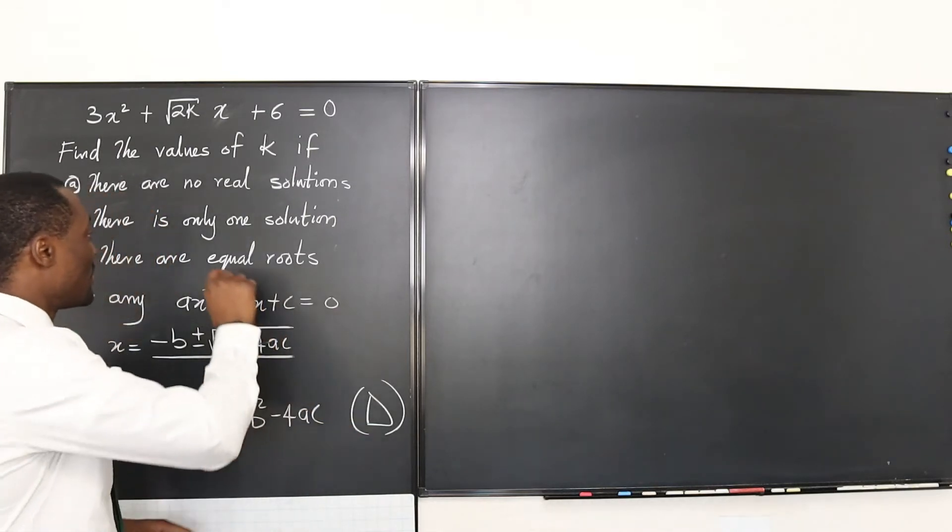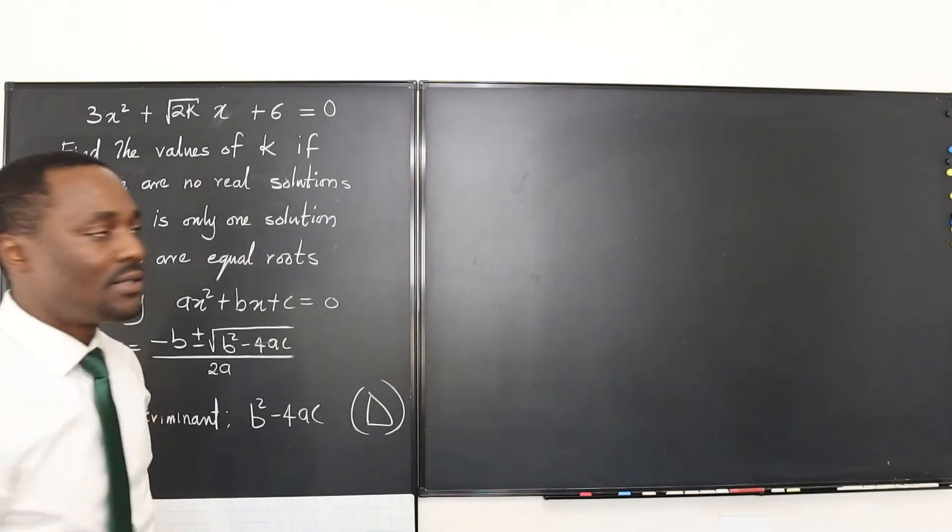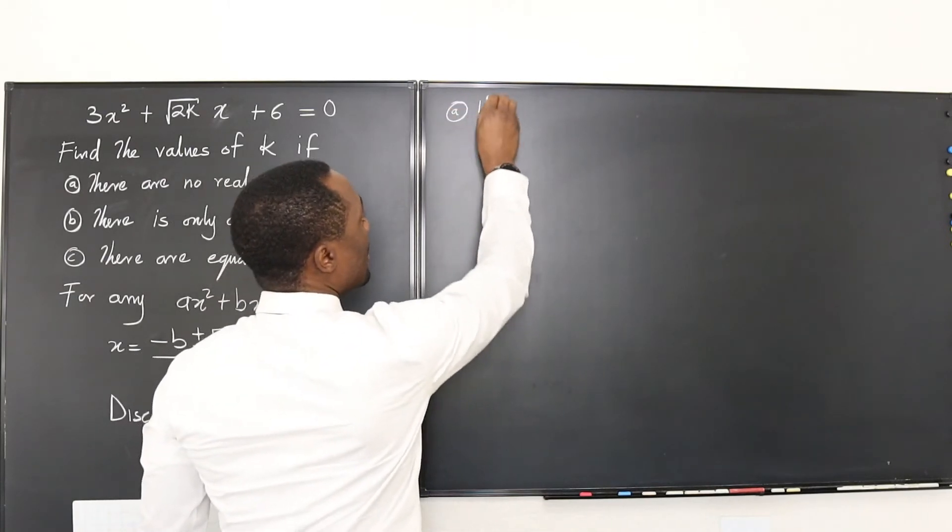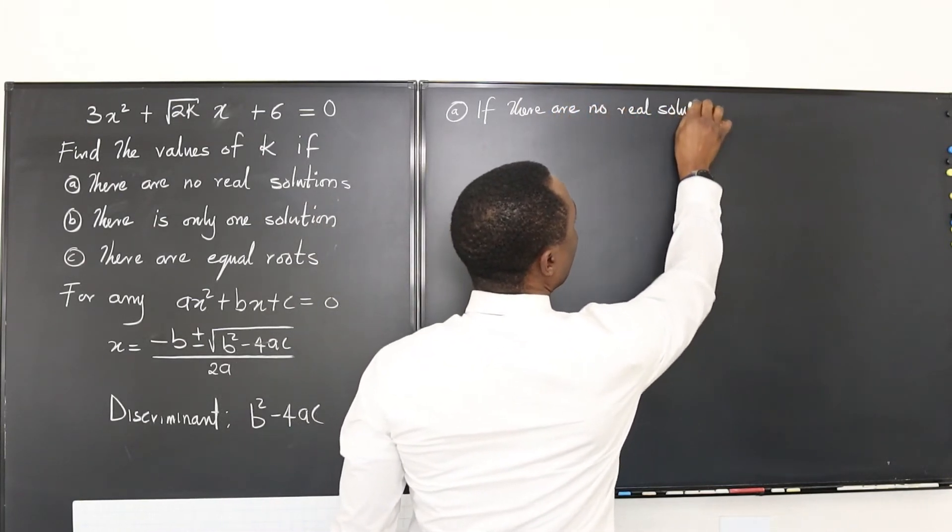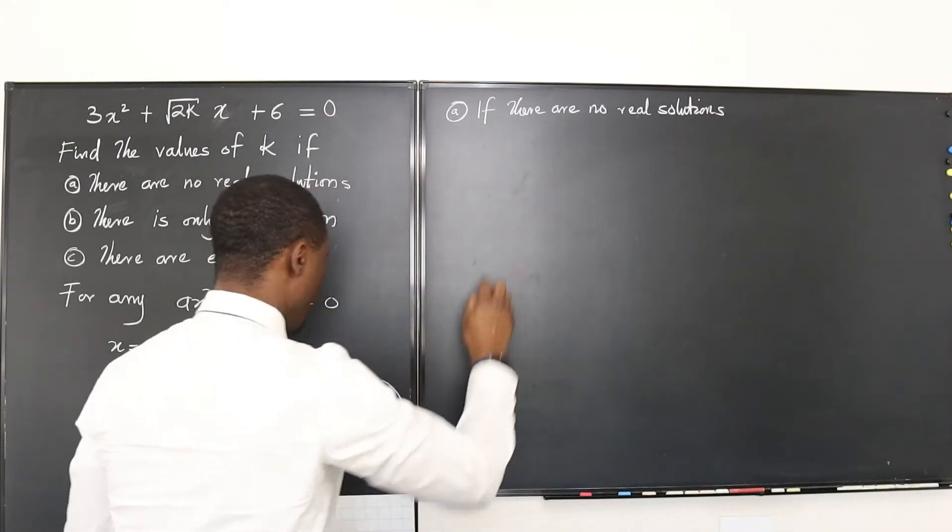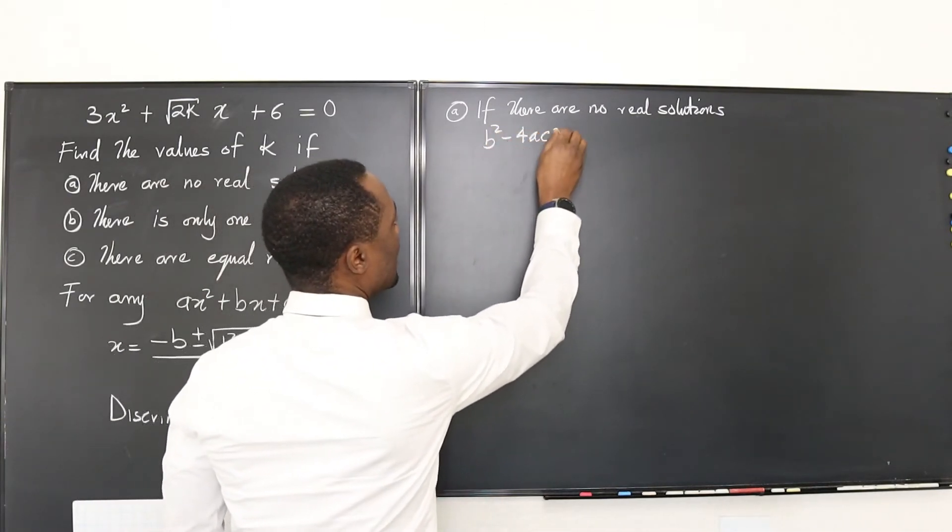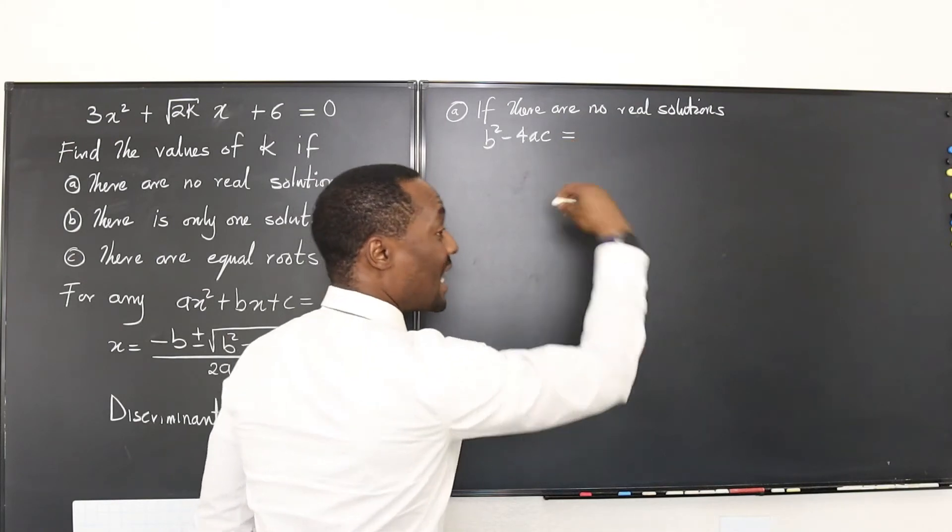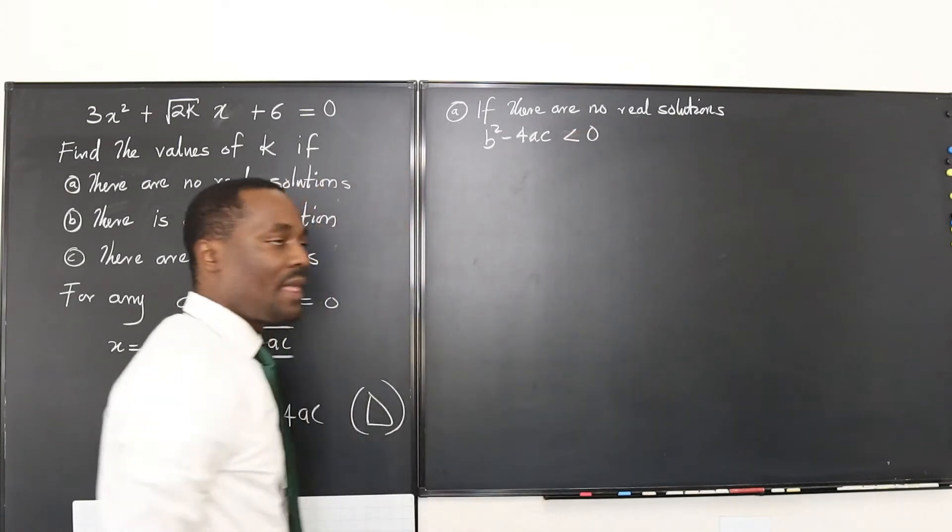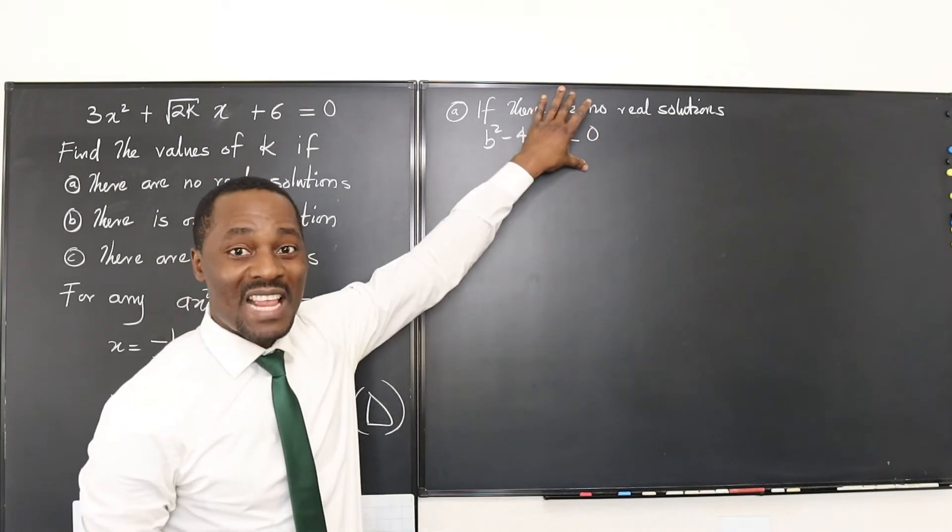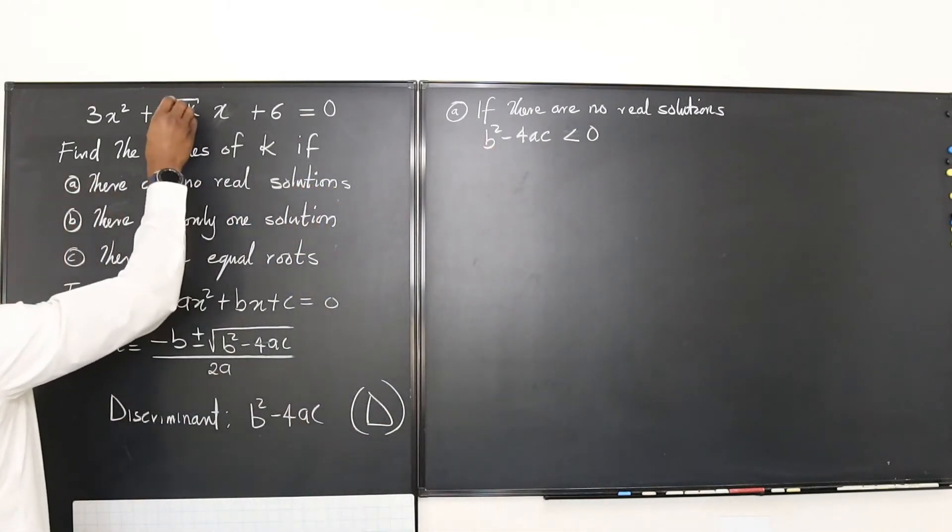So the discriminant must be positive if you're going to get real answers. If the discriminant is negative, you're going to start getting answers that are not real and it's going to provide you the answer to a. So let's look at the conditions for a. If there are no real solutions, then we say b squared minus 4ac is negative. So you can say b squared minus 4ac is less than zero. Remember, if a number is negative, then it's less than zero. So that's what happens and that's what you need.